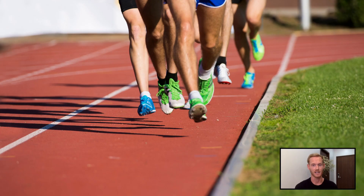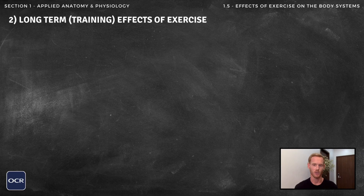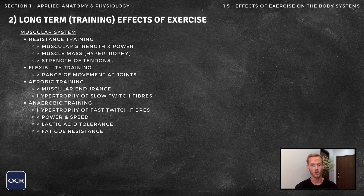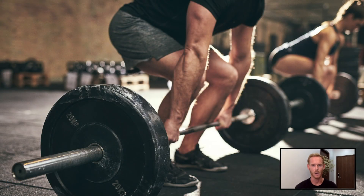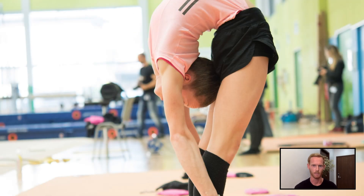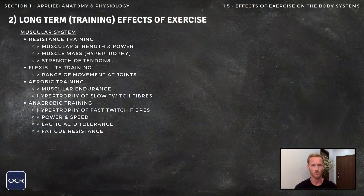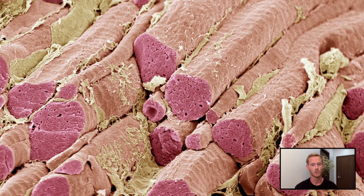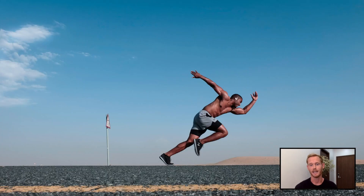Moving on to the long-term effects of exercise, or the effects of training, beginning with the muscular system. In response to weight or resistance training, athletes experience an increase in muscular strength and power, partly due to muscular hypertrophy — an increase in the size or mass of a muscle. Tendons which join muscle to bone also become stronger. Flexibility training increases the elasticity of muscles, improving range of movement at joints. Endurance training improves muscular endurance, partly due to hypertrophy of slow twitch muscle fibres, which produce more energy through aerobic respiration. High intensity anaerobic training leads to an increase in the size of fast twitch muscle fibres, improving power and speed.